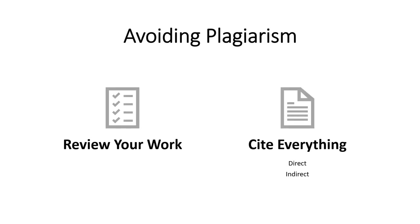The easiest way to avoid plagiarism is to review your work. This means noting whenever you include someone else's ideas, information, writing, or thinking, and providing a proper citation or attribution. Remember to cite everything, whether it is a direct use, like a quote or reproduction of material, or an indirect use, like a paraphrase or summary.